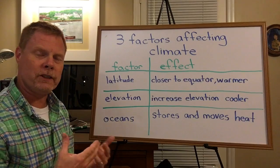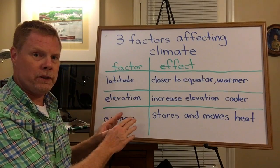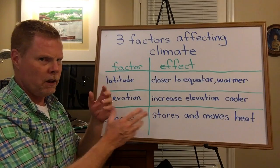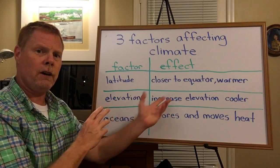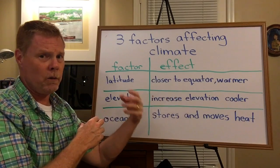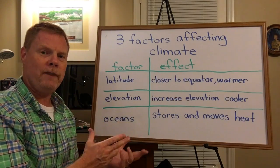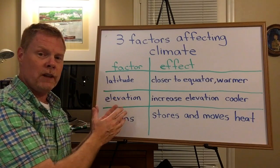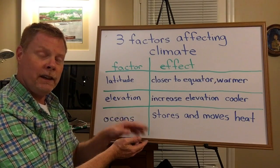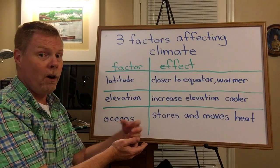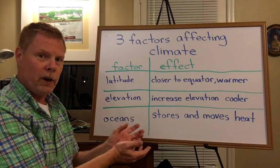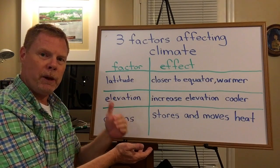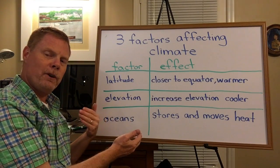The third factor that affects an area's climate is the oceans. The oceans tend to store and move heat throughout the year. Ocean currents can move heat around the planet, affecting an area's climate. Also, during the warm summer months the ocean stores heat and stays warm into the fall. When it starts to cool down, the ocean releases that heat and keeps nearby land masses a little bit warmer than areas further inland.